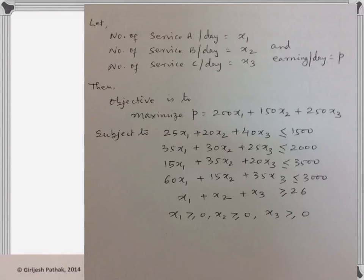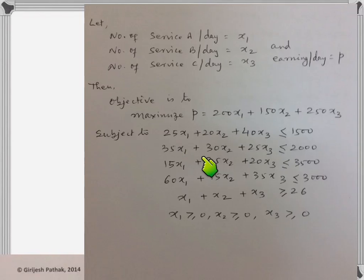The constraints are: 25x1 plus 20x2 plus 40x3 less than or equal to 1500, which represents the requirement of resource 1 not exceeding its availability of 1500. For resource 2, the constraint is 35x1 plus 30x2 plus 25x3 less than or equal to 2000. Since the number of services per day must be more than 25, we also have x1 plus x2 plus x3 greater than or equal to 26. Non-negativity constraints: x1, x2, x3 all greater than or equal to 0.